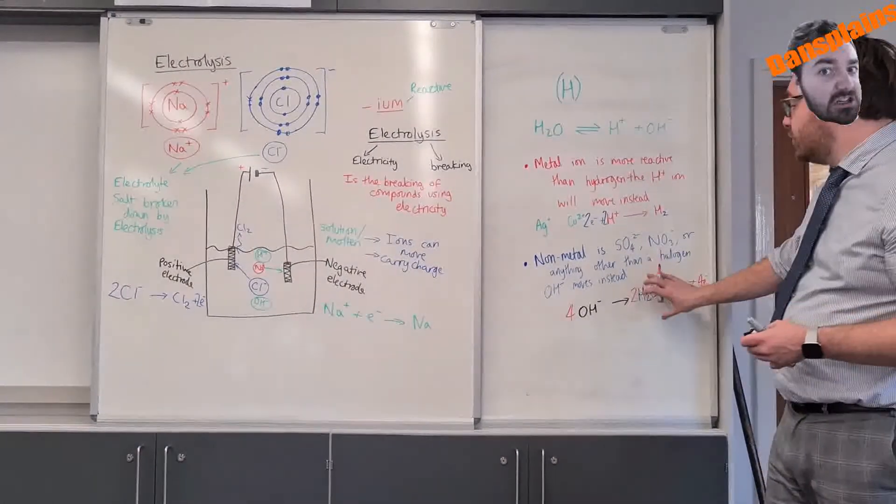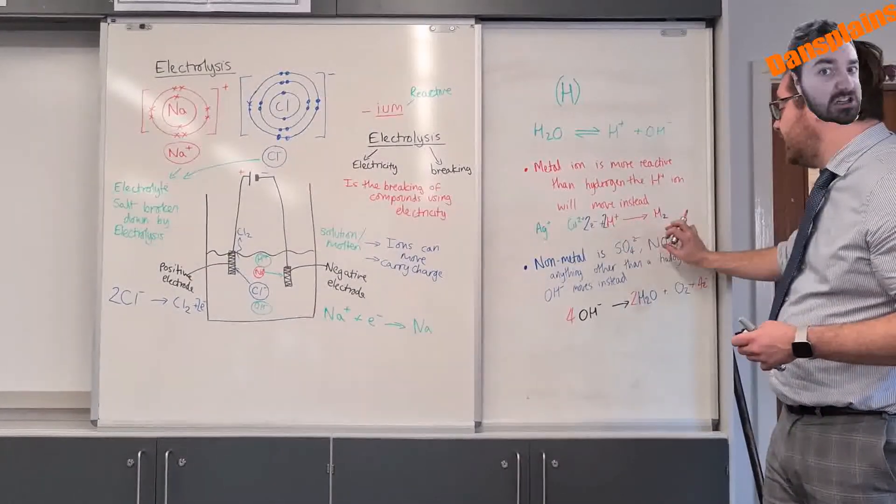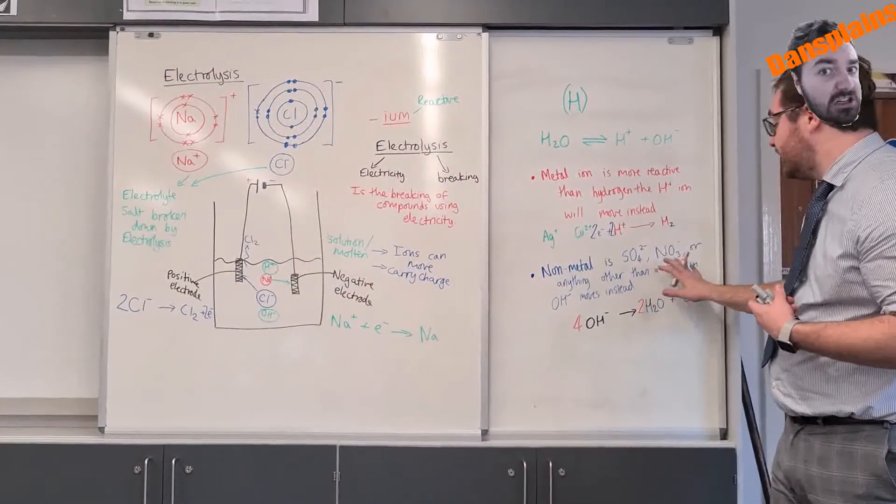So that is the half equation for anything sulfate, nitrate, phosphate - anything that is not a halogen.